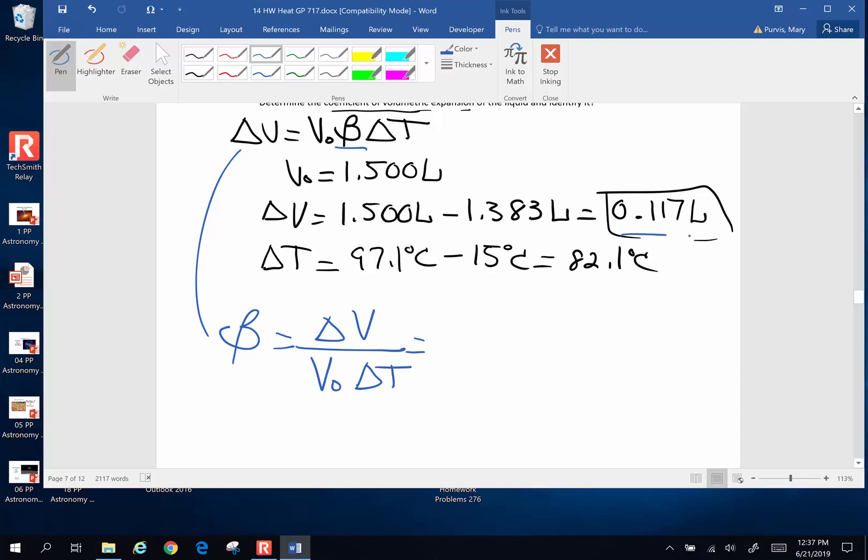Change in volume is 0.117 liters. The original volume is 1.500 liters. Beta ends up being 0.117 divided by 1.5 divided by 82.1. And I end up with a wacky number. It's very, very small. I get 9.501 times 10 to the negative fourth.